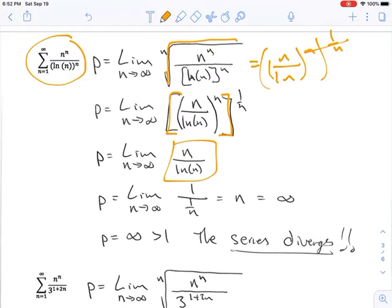And so clearly, as n approaches infinity, n approaches infinity. So therefore, infinity is greater than 1, and the series diverges.